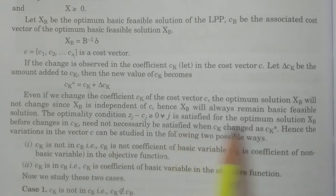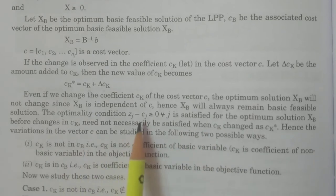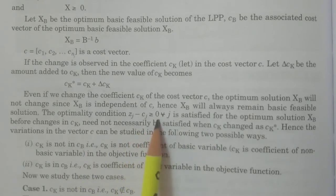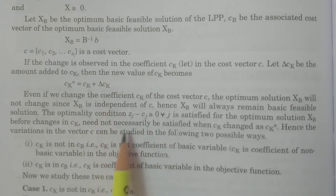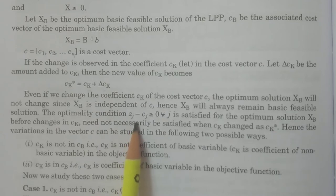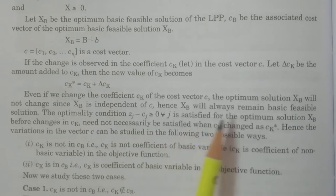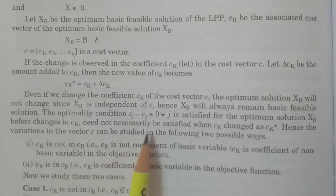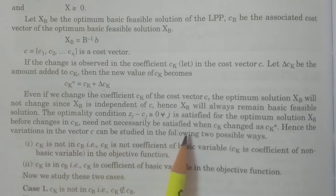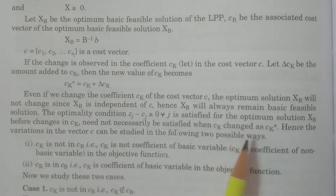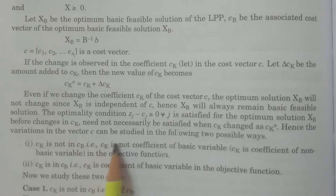Now the optimality condition zj - cj ≥ 0 must be checked. Even with this particular change, the net evaluations must remain greater than or equal to 0. Before the changes in ck, the condition may or may not be satisfied after ck is changed to ck*. Hence, variations in the vector c can be studied in the following two possible ways.